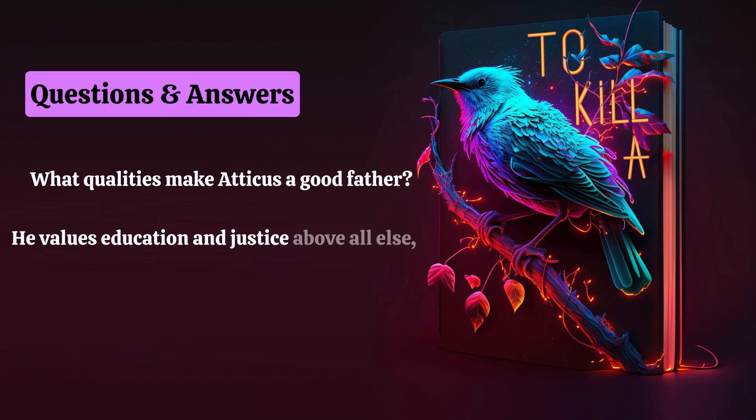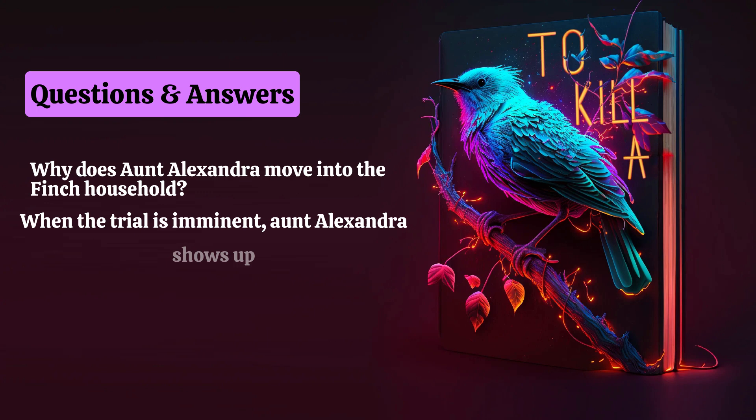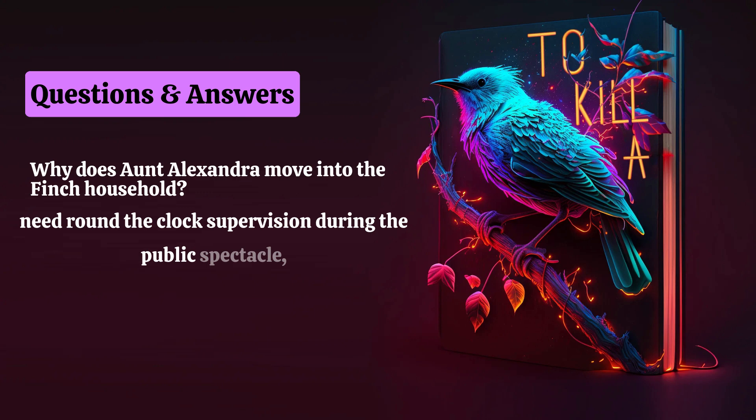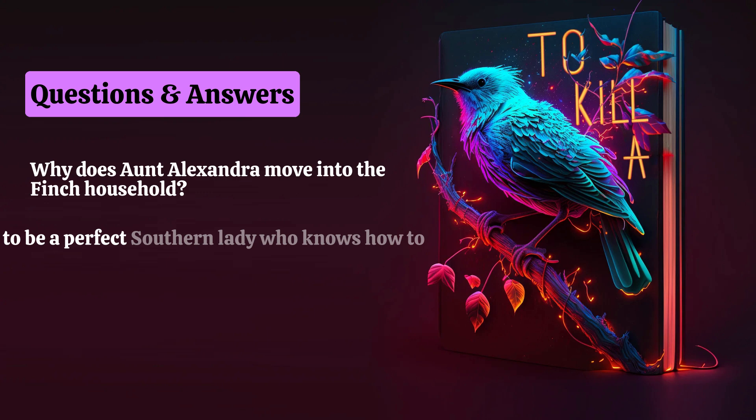Why does Aunt Alexandra move into the Finch household? When the trial is imminent, Aunt Alexandra shows up at the Finch home and announces that she's there to stay for the benefit of Jem and Scout. She and Atticus agree that Jem and Scout may need round-the-clock supervision during the public spectacle, and she believes that the children need more exposure to the propriety and traditions of their upstanding family. Aunt Alexandra also believes that Scout needs to be taught to be a perfect Southern lady who knows how to wear a dress, serve tea, and converse with other women.